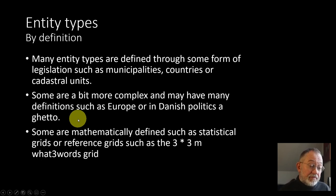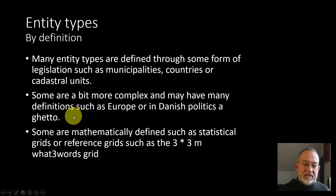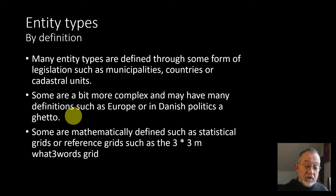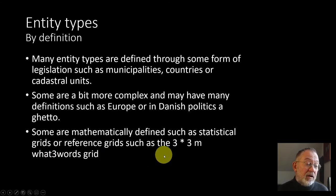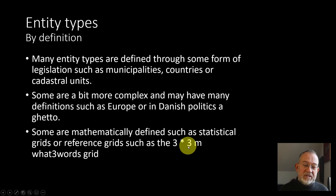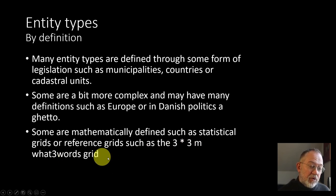Finally, there are entities that are mathematically defined — basically statistical grids. Instead of having statistics on municipalities, you could have statistics on 10 by 10 kilometer, 100 by 100 kilometer, or 100 by 100 meter grids. Or we can use the what3words grid, which is 3 by 3 meters — so the whole world is divided into small 3 by 3 meter grids — and then we use the what3words reference system to reference each of these grids.